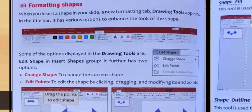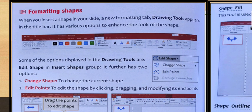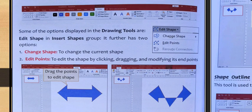Formatting shapes: when you insert a shape in your slide, a Format tab Drawing Tools appears in the title bar. It has various options to enhance the look of the shape. Some of the options displayed in Drawing Tools are Edit Shape, Insert Shapes, and Group. It further has two options: Change Shape and Edit Points. Here you can see the image. Change Shape to change the current shape or Edit to edit the shape by clicking, dragging, and modifying its points.